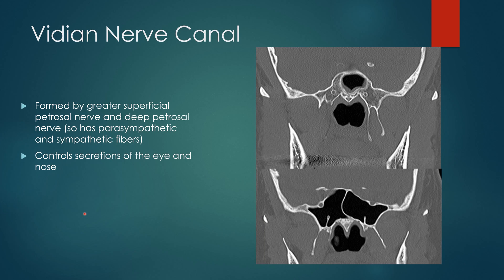The vidian nerve canal: the vidian nerve is formed by the greater superficial petrosal nerve and the deep petrosal nerve, giving it parasympathetic and sympathetic fibers that control secretions of the eye and the nose. To find it, go to a coronal view, look for the pterygoid plates, and find a small foramen just above them. This is the normal appearance of the vidian nerve canal — safe within the bone. A superficial positioning of the vidian nerve canal means it's on a little stalk, not covered by bone. If this patient had sinus surgery, it would be easy to inadvertently injure it hidden underneath the mucosa.